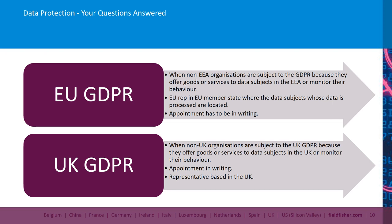The UK GDPR also sets out the requirement of appointing a UK representative, which is a similar role to the EU representative under the GDPR. Organisations outside of the UK who target individuals in the UK or monitor their behaviour will be required under the UK GDPR to appoint a UK representative in the UK. Both the EU GDPR and the UK GDPR set out two exceptions to this requirement: first, public authorities or bodies will not have to appoint a representative; and second, processing that is occasional and does not include processing of special category data or data relating to criminal convictions at large scale, and is unlikely to result in a risk to the rights and freedoms of individuals, will not require the appointment of a representative.